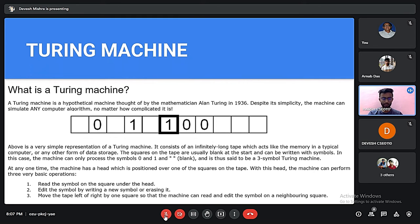Let's discuss the Turing Machine. It was first developed by mathematician Alan Turing in 1936. Despite its simplicity, the machine can simulate any computer algorithm no matter how complicated it is. It is a simple representation of the Turing machine and consists of an infinitely long tape which acts like memory in a typical computer. The squares on the tape are initially blank at the start and can be written with symbols.